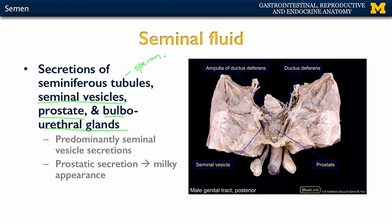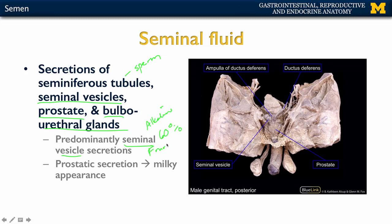The highest volume of semen is going to come from the seminal vesicles — about 60% — and this is what's giving that alkaline pH. Remember that the seminal vesicle fluid is going to have fructose associated with it, giving the alkaline appearance, and it's also going to be giving semen that kind of sticky texture.